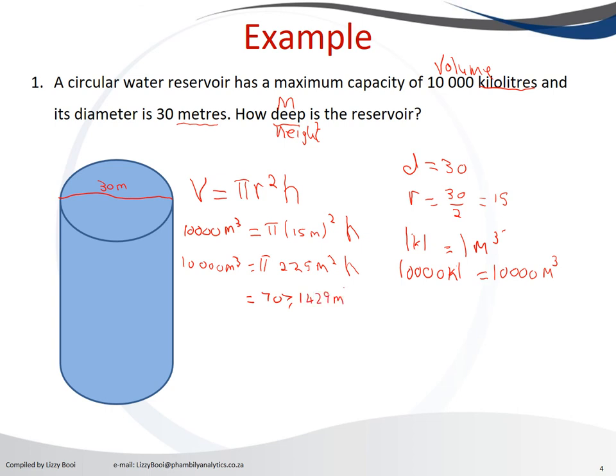225 meter cube times pi is equivalent to 707.1429 meter cube times height. We can divide this side by 707.1429 meter square. What you do on that side, you must do on this side: 707.1429 meter square.